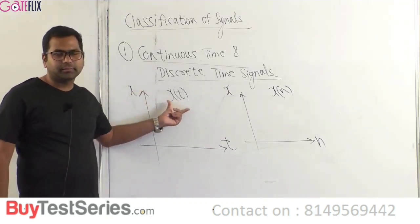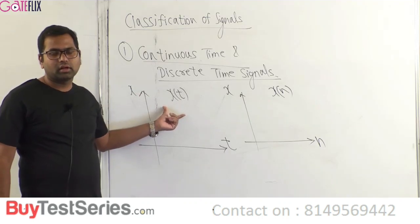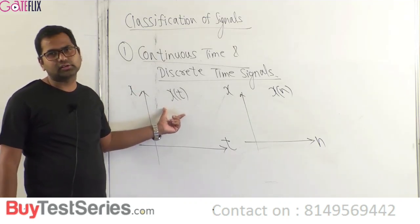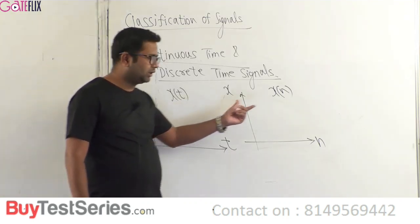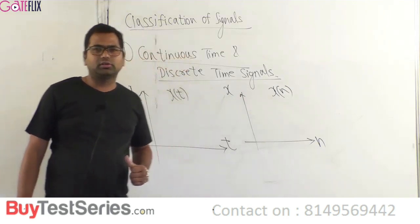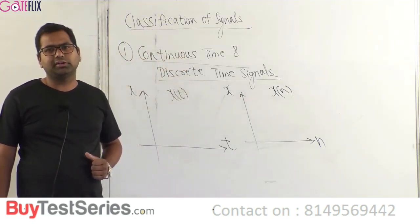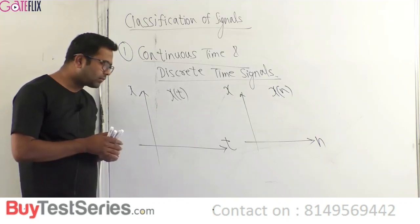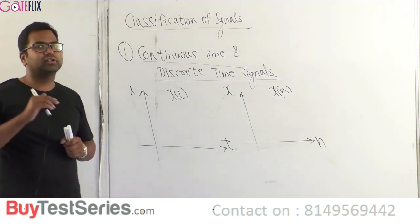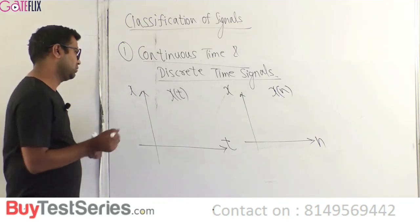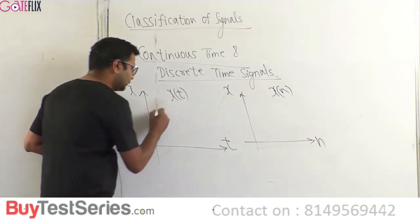The signal x(t) is always the notation used for continuous time signals. Similarly, the notation x(n) is always used for discrete time signals. What is the difference between the two? Let us understand.